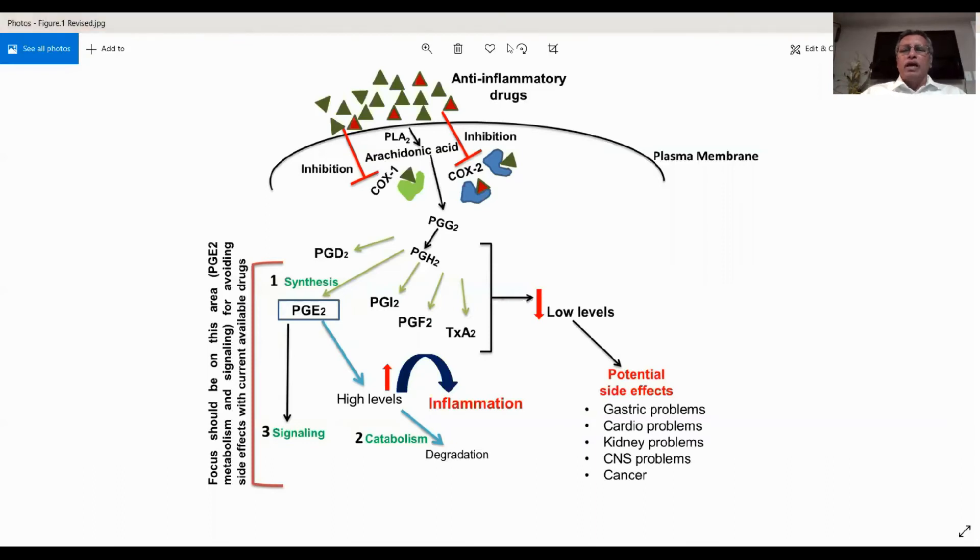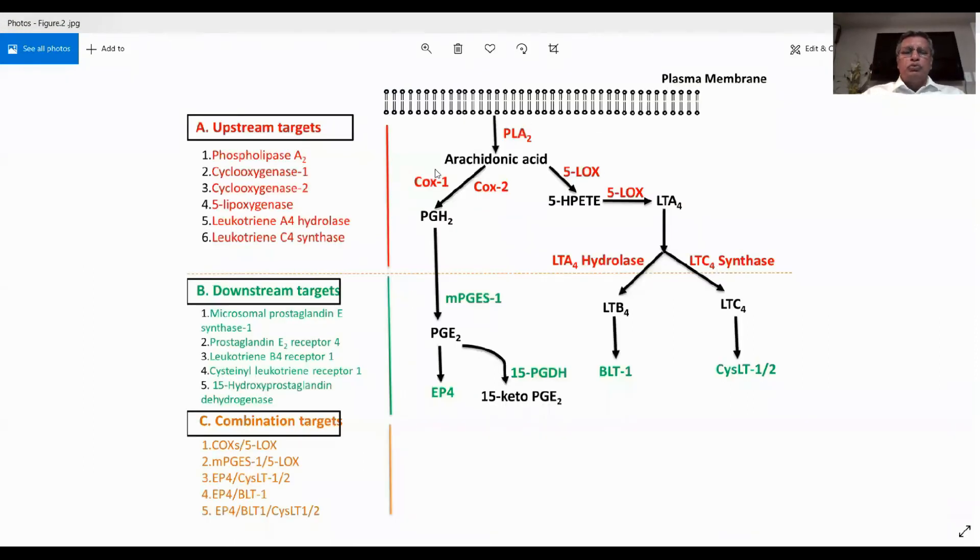Let me share another figure. In addition to the prostaglandin pathway, the lipoxygenase pathway also produces leukotrienes which are major mediators of inflammation. As a result, the focus is on developing COX-LOX dual inhibitors.